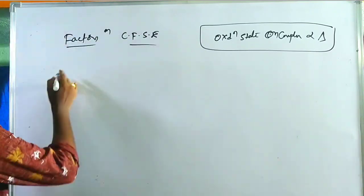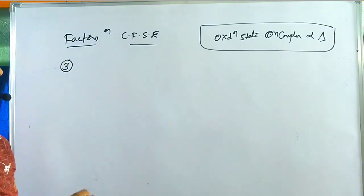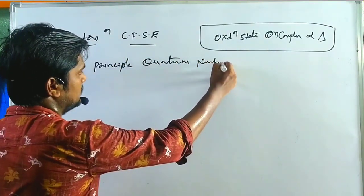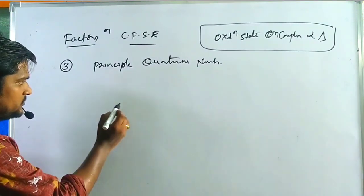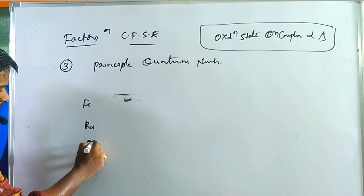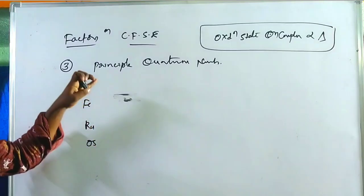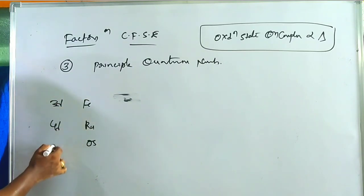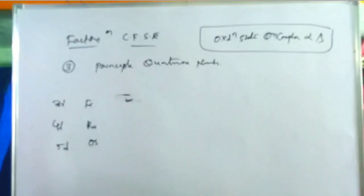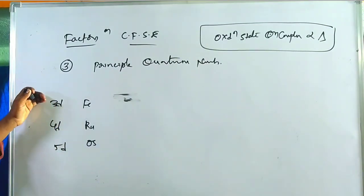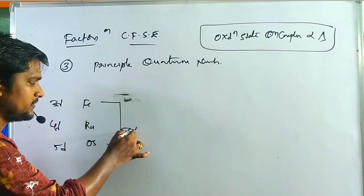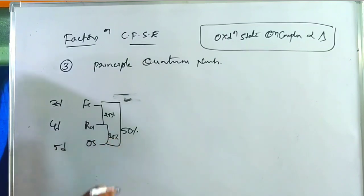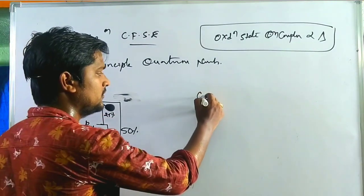The third factor is the principal quantum number. Consider iron, ruthenium, and osmium — they have the same oxidation state and number of electrons but differ in principal quantum number (3d, 4d, 5d). From 3d to 5d, the crystal field splitting increases approximately 50%: about 25% from iron to ruthenium, and another 25% from ruthenium to osmium.